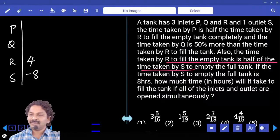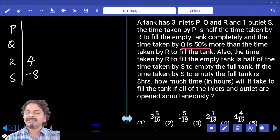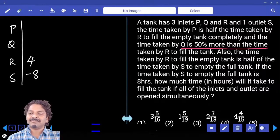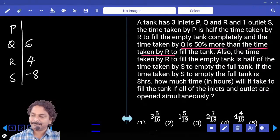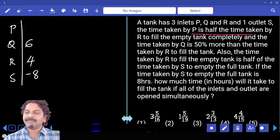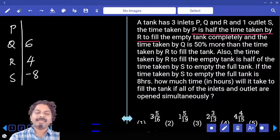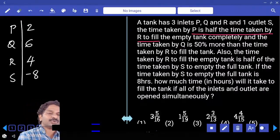Then this is 4, and before that Q is 50% more time than R, then it is 6, and then P takes half the time taken by R, that is 2.